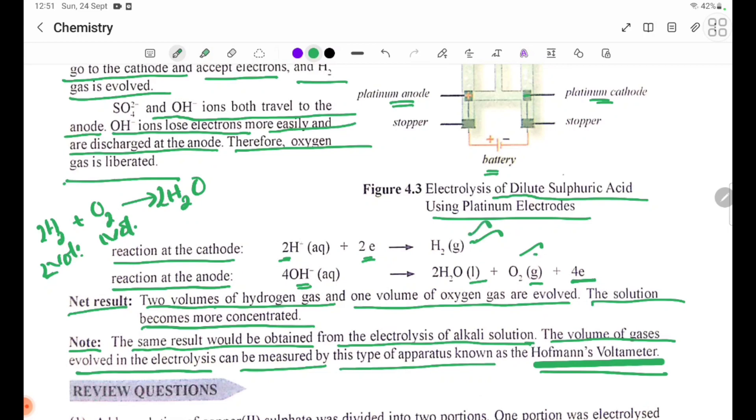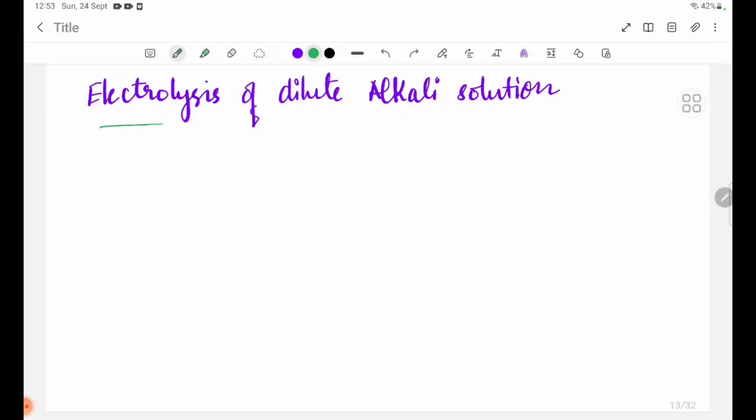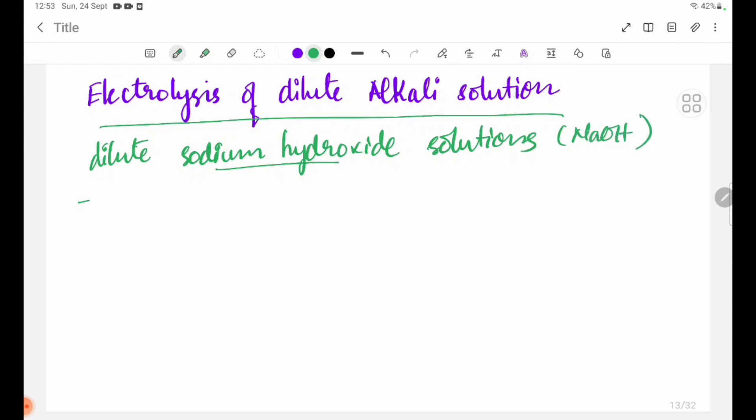The electrolysis of dilute alkali solution is dilute sodium hydroxide, NaOH. We have H plus, Na plus, and OH minus ions from NaOH and H2O.